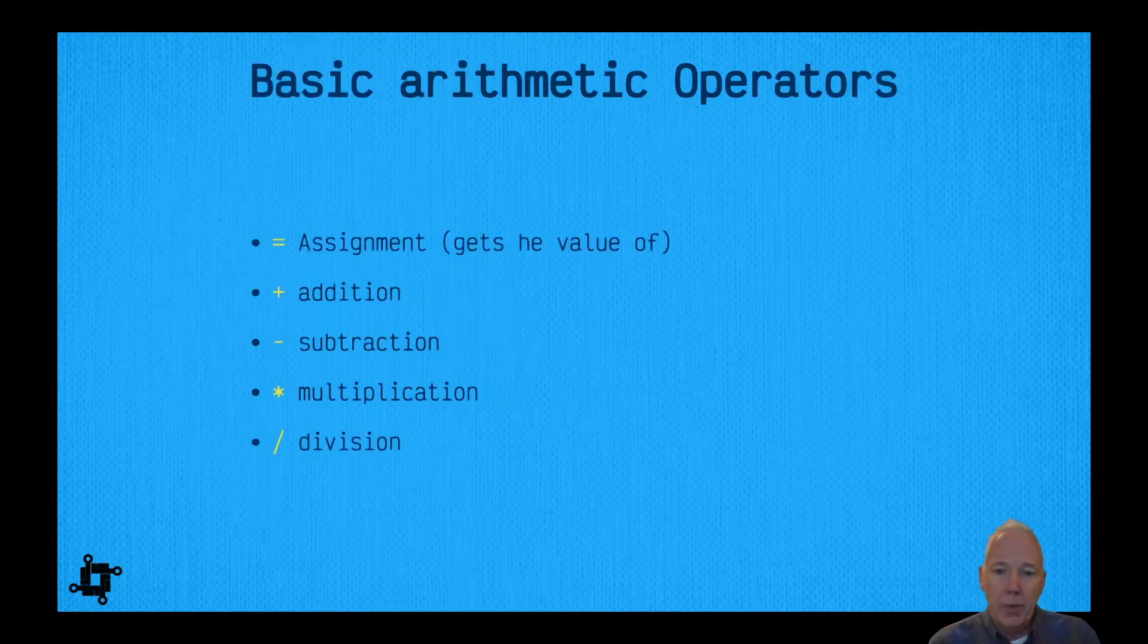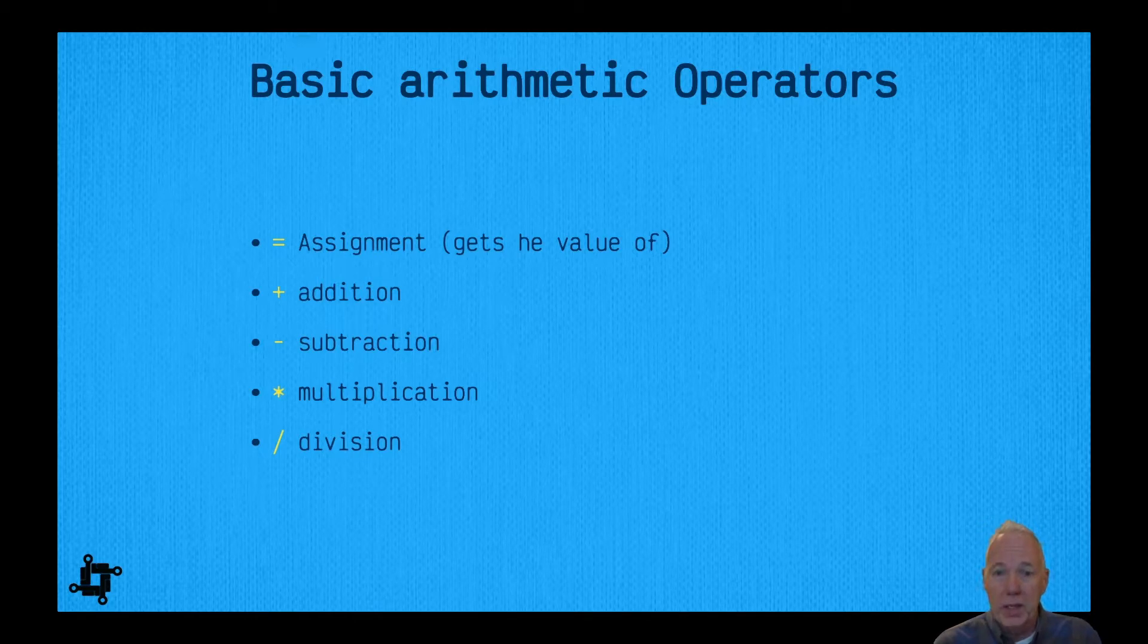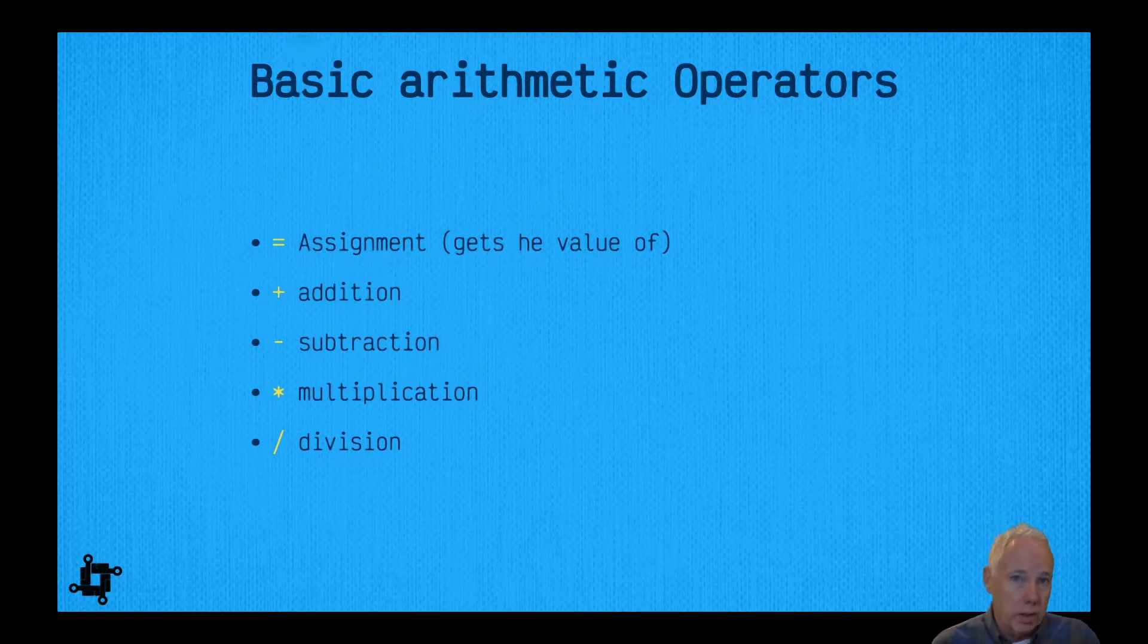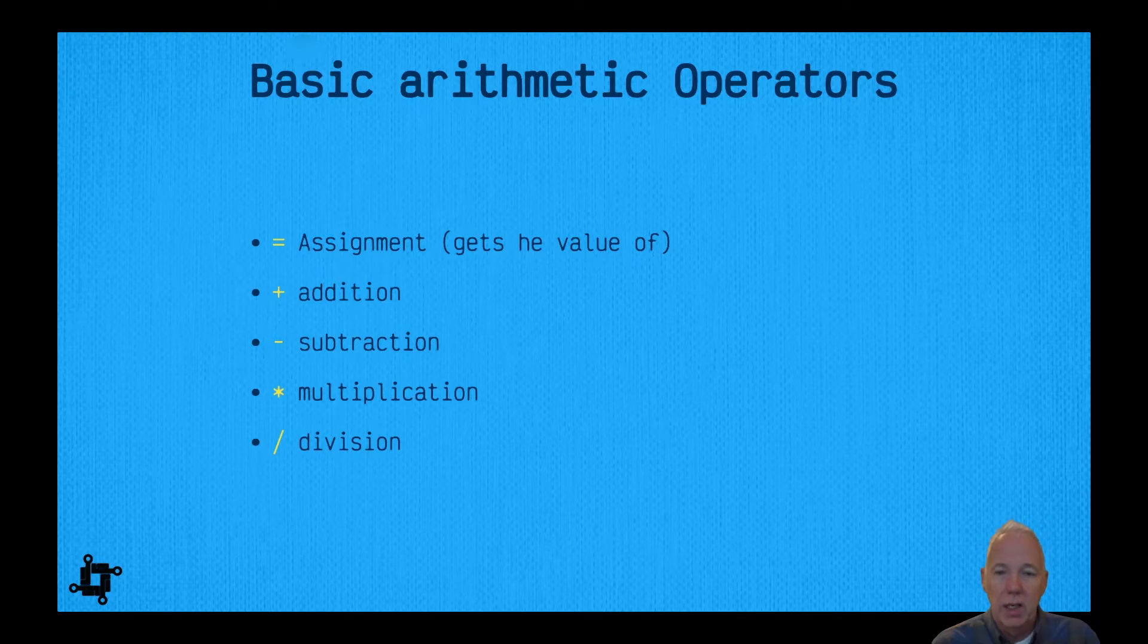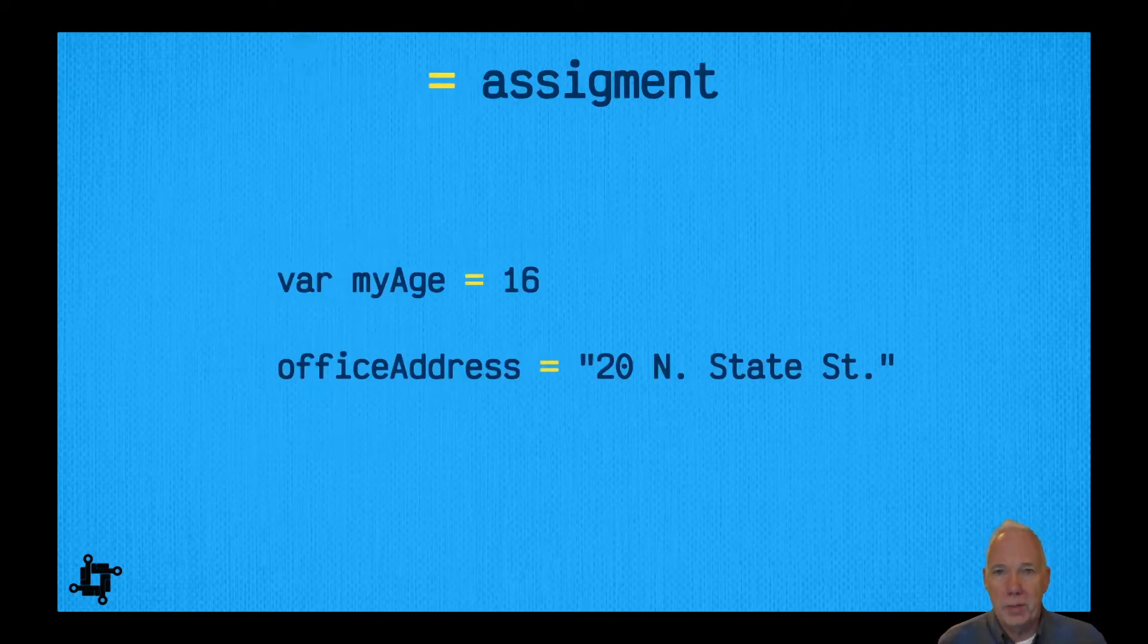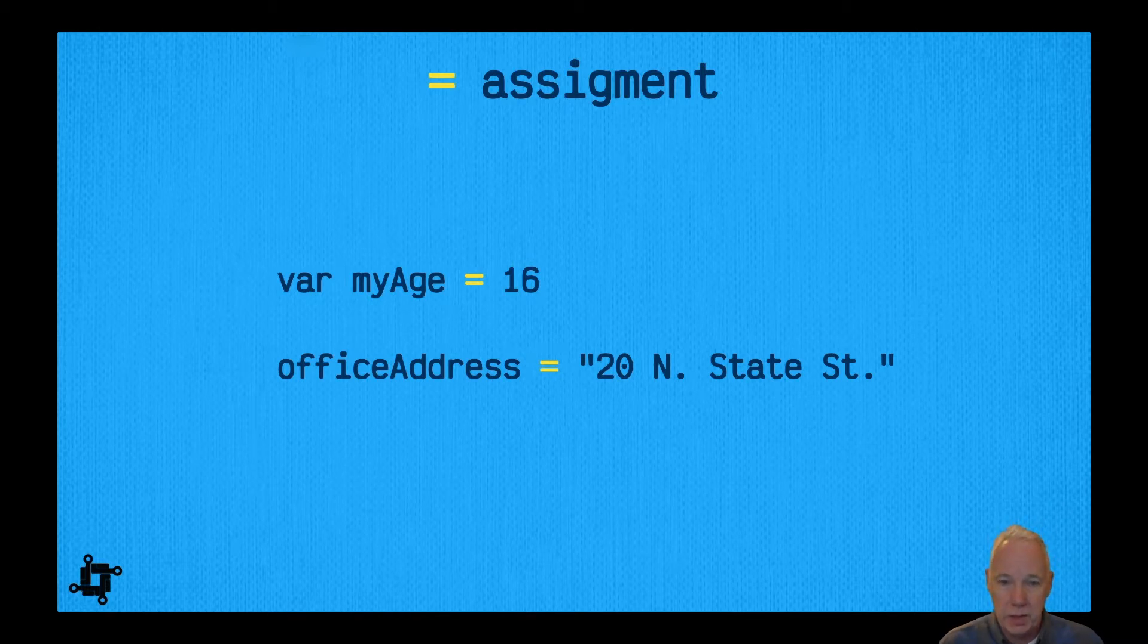For basic arithmetic operators we have five different things. One is the assignment itself, which remember we said is 'gets the value of'. We also have the plus operator which is addition, the minus which is subtraction, the multiply or asterisk or star which is multiplication, and then finally division which is the slash. Let's start out with assignment. The assignment operator is basically the equal sign.